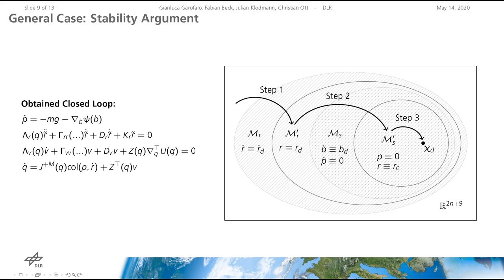In order to conclude the asymptotic stability of the equilibrium conditionally to MR', one has to show that the equilibrium is conditionally asymptotically stable with respect to the set MS'. In the last step, LaSalle's invariance principle is employed to conclude this. Another positive semi-definite Lyapunov function is used to show that the null space dynamics converges and the task is fulfilled. This completes the proof.